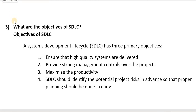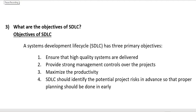Question three: What are the objectives of SDLC? A System Development Life Cycle has three primary objectives: First, ensure that high quality systems are delivered. Second, provide strong management controls over the projects. Third, maximize the productivity. Fourth, SDLC should identify the potential project risk in advance so that proper planning can be done early. Take a screenshot.